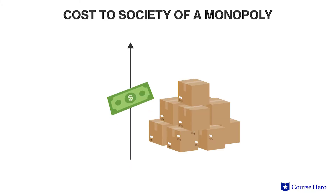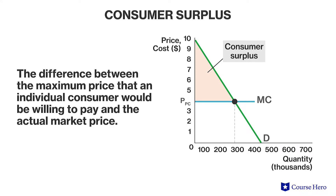One aspect of the cost to society of a monopoly compared to a perfectly competitive market is that consumers pay a higher price and see less product available for purchase. This affects consumer surplus and as a result, total surplus. Consumer surplus is the difference between the maximum price that an individual consumer would be willing to pay to receive a good or service and the actual market price that the consumer has to pay.